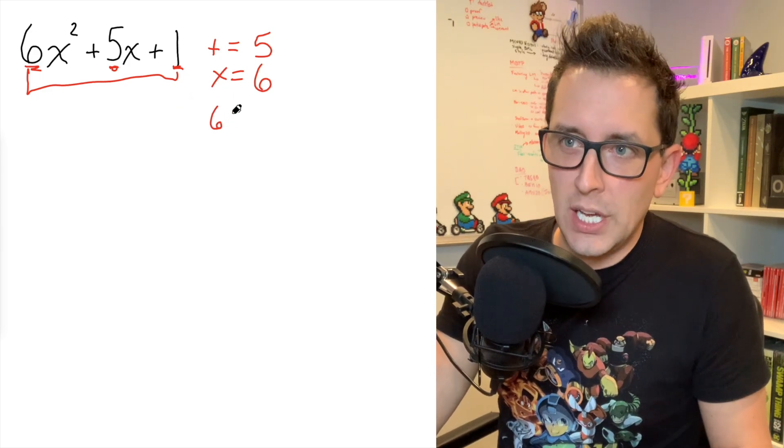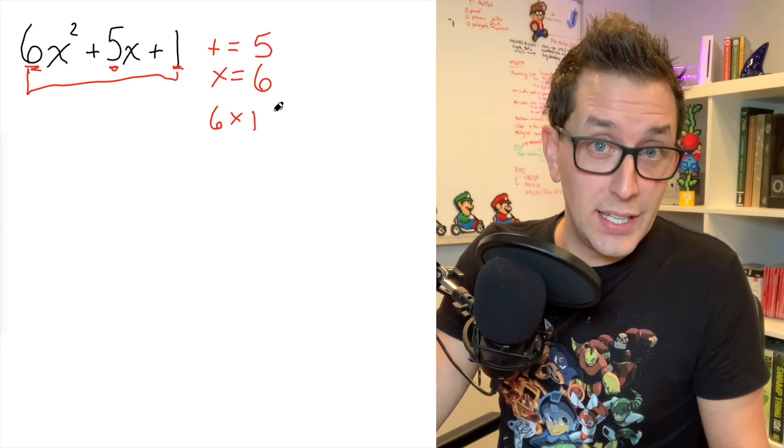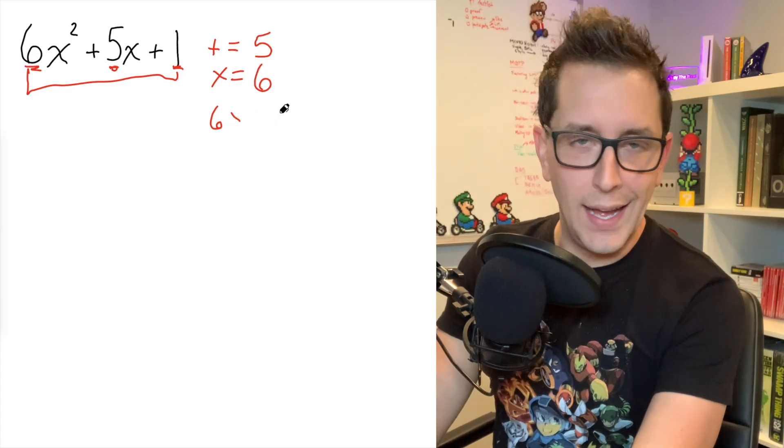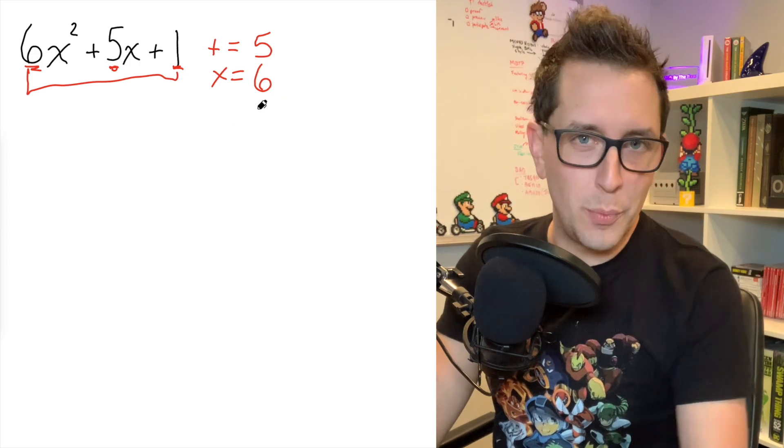So what I do is I just try two numbers that I know multiply to get six. Let's just pick on six and one first. I know that six times one is going to give me six, but six and one will never add to get me five, right? So I can throw those numbers in the garbage.